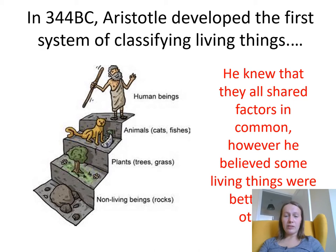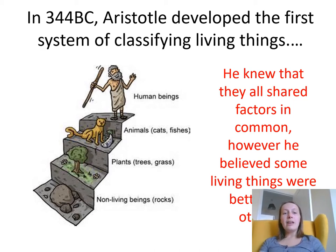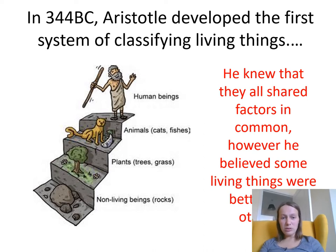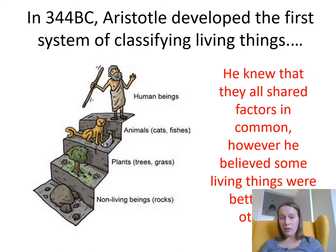So, this is a technical history bit, I'll read it for you. In 344 BC, Aristotle developed the first system of classifying living things: human beings at the top, then animals, then plants, and then things that weren't alive at all. He knew they all had things in common; however, he believed some living things were better than others.